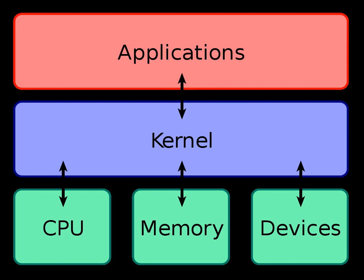The idea of a kernel where I/O devices are handled uniformly with other processes as parallel co-operating processes was first proposed and implemented by Brinch Hansen, although similar ideas were suggested in 1967. In Hansen's description, common processes are called internal processes, while I/O devices are called external processes. Similar to physical memory, allowing applications direct access to controller ports and registers can cause the controller to malfunction or the system to crash. Some devices can get surprisingly complex to program, making a more abstract interface important. This interface is normally done by a device driver or hardware abstraction layer.